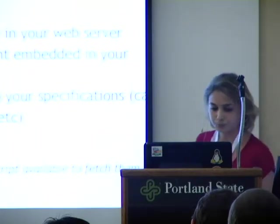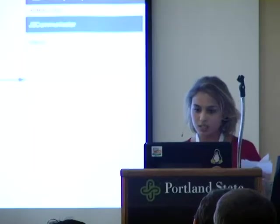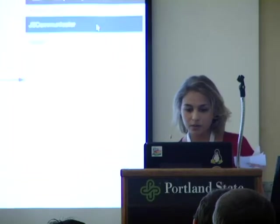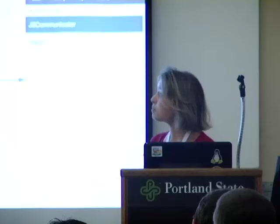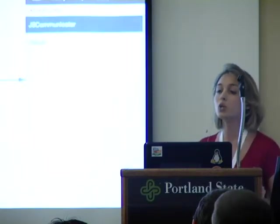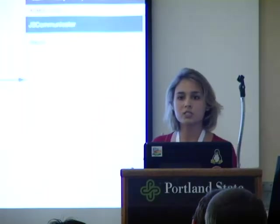This shows the Xtuple extension I wrote. Xtuple is open source business management software. Install the NPM package for the Xtuple-JSCommunicator extension and it appears right in the web app. JSCommunicator appears integrated into their web application. I had to write the model and view to adhere to Xtuple standards, but the JSCommunicator code itself was not modified - I just included the folder in the source.